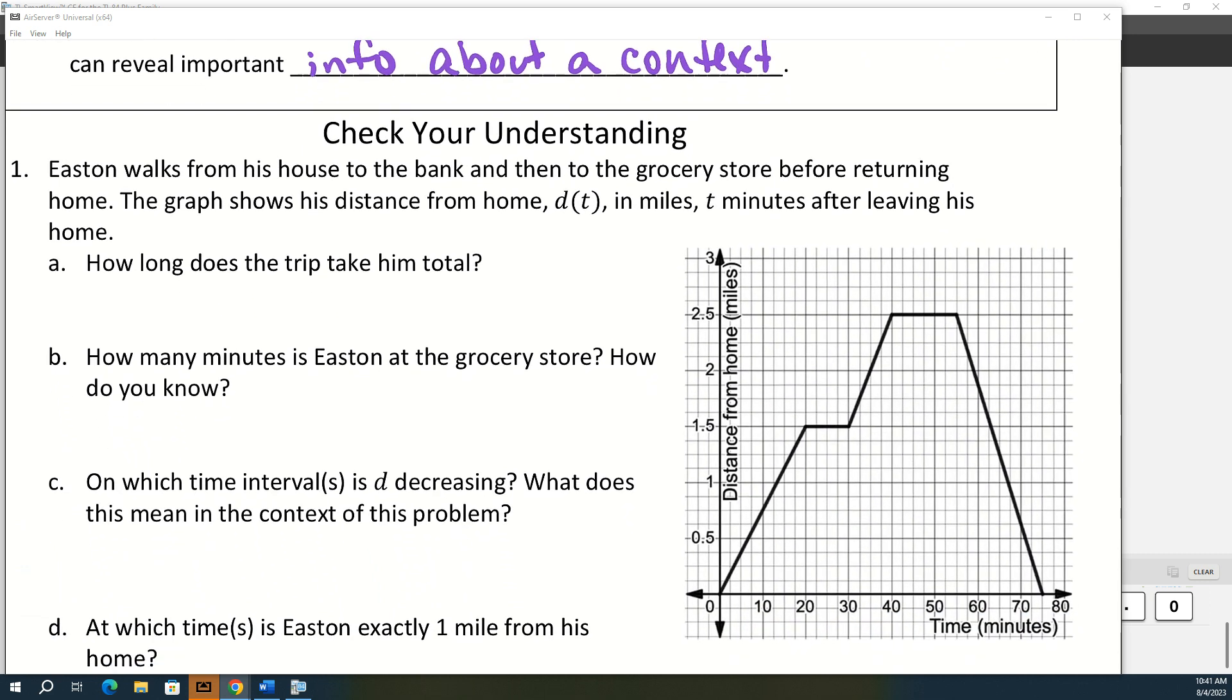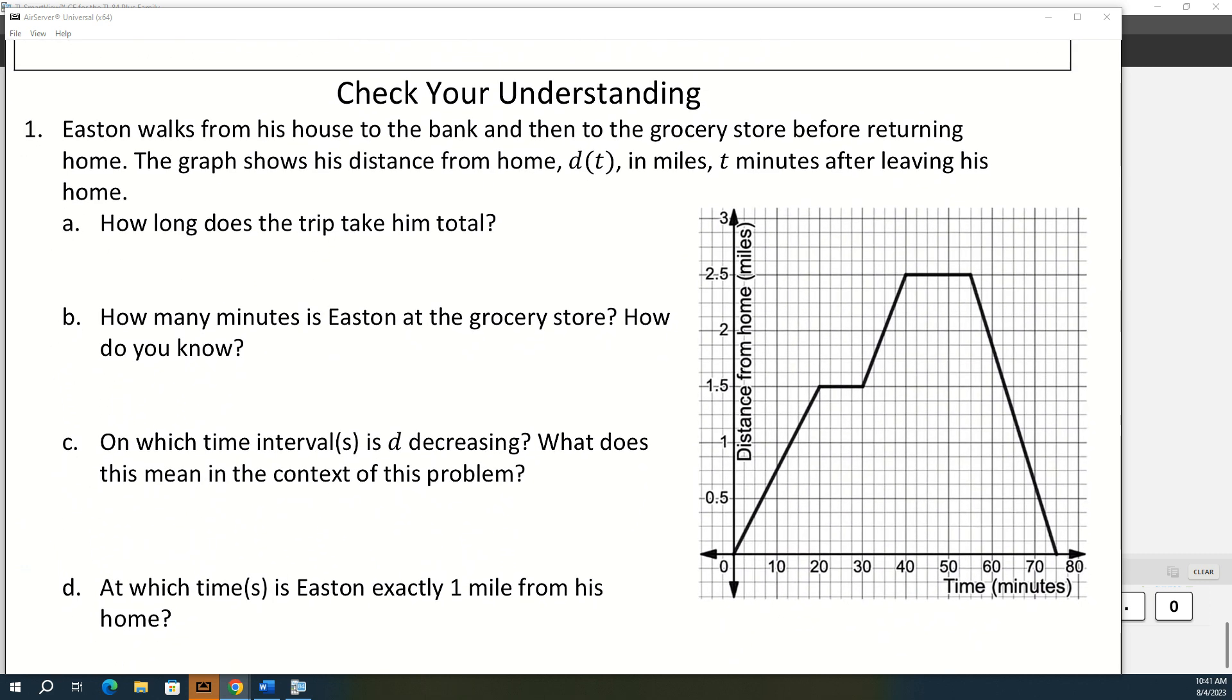So with this first example, we have Easton, and he's walking around. So he walks from his house to the bank, and then to the grocery store before returning home. The graph shows his distance from home, which is d of t in miles, and our t minutes after leaving his home.